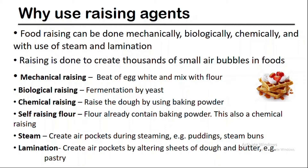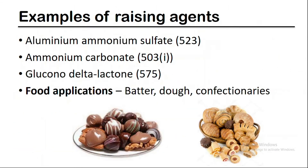Steam can create air bubbles during the processing of food such as puddings and steam buns. Air bubbles can also be created by alternating sheets, called lamination — for example, in pastry production, lamination is done by alternating sheets of dough and butter. Aluminium ammonium sulfate, ammonium carbonate, and glucono-delta-lactone are some examples of raising agents used in the food industry. Dough and confectionery processing use raising agents for these purposes.